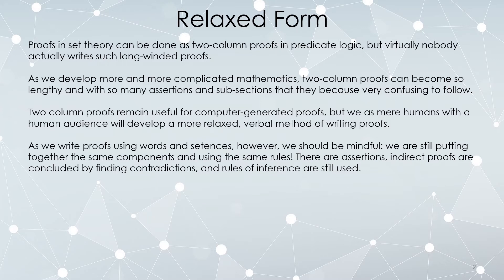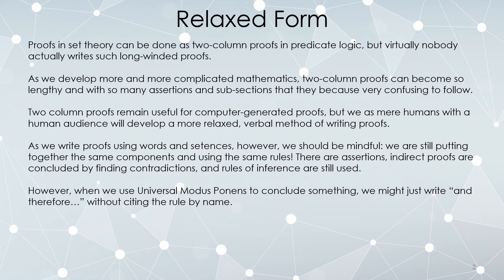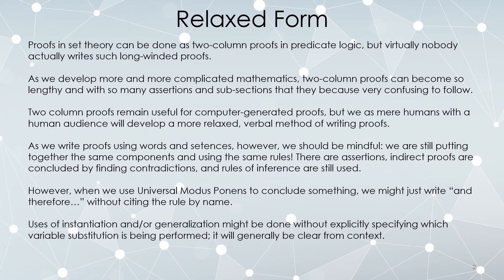As we write these proofs using words and sentences, do be mindful that we're still doing the same steps that go into a two-column proof. There are assertions, we make assumptions, we find contradictions, rules of inference are used. There is a two-column proof happening in the background — we just write it in an easier way. So instead of saying 'justified by universal modus ponens,' you might just write 'and therefore,' without necessarily citing the rule by name because it may be obvious which rule you're using.